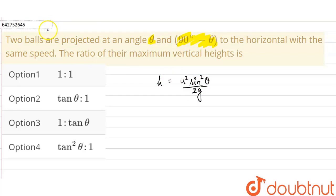Now using this relation, we will solve this question. So for the first particle, which is projected with an angle of theta, the maximum height is given as h1 equals u square sine square theta upon 2g.